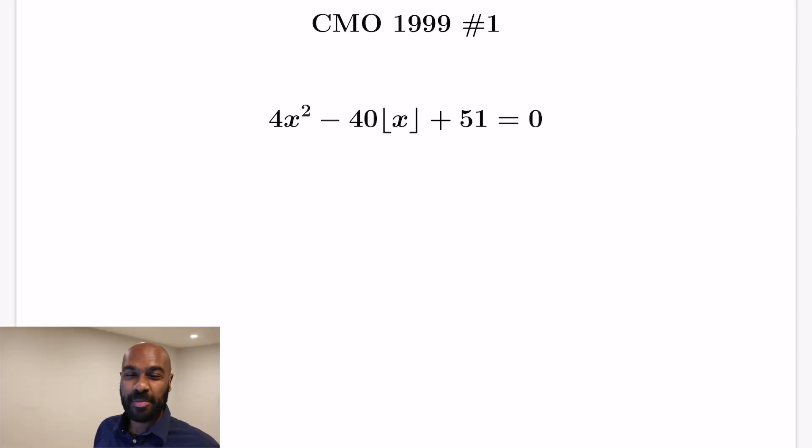In this video, we're going to solve a fascinating problem from the 1999 Canadian Math Olympiad. It's the first problem on the actual Olympiad, and it states to find all solutions to the equation 4x² - 40⌊x⌋ + 51 = 0.